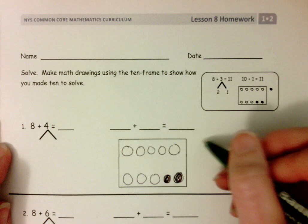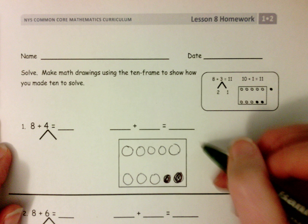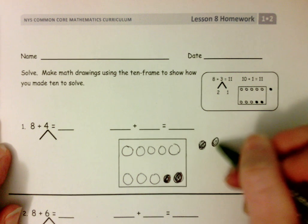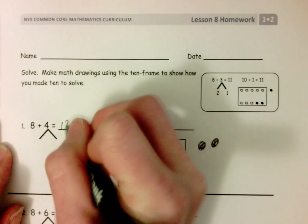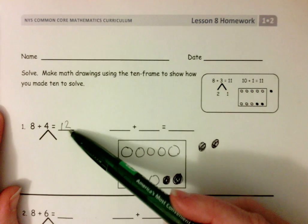And students that want to count on for right now can count on, if that's easier for them: 8, 9, 10, 11. If that's an easier way for them to solve it at first, we can still promote that and give them confidence in solving.